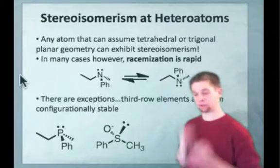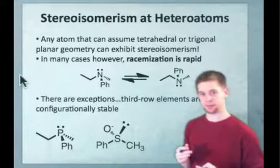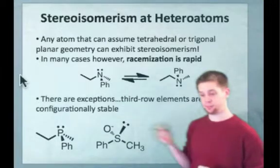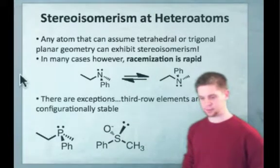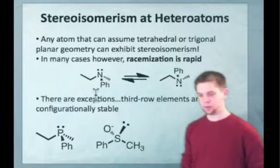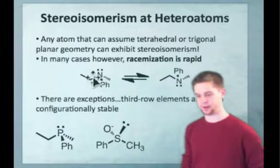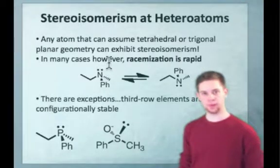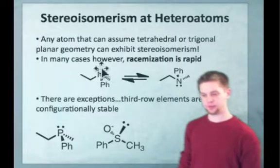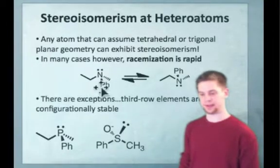So as long as we can suppress racemization, we can observe, for instance, the two enantiomers of an amine with three different groups attached to it. You'll notice in the amine that I've drawn here, this is essentially a chiral amine with an asymmetric nitrogen — a nitrogen that's a stereocenter. Think of the lone pair as a group in and of itself. So this nitrogen is, in a sense, a tetrahedral atom with four different groups attached.